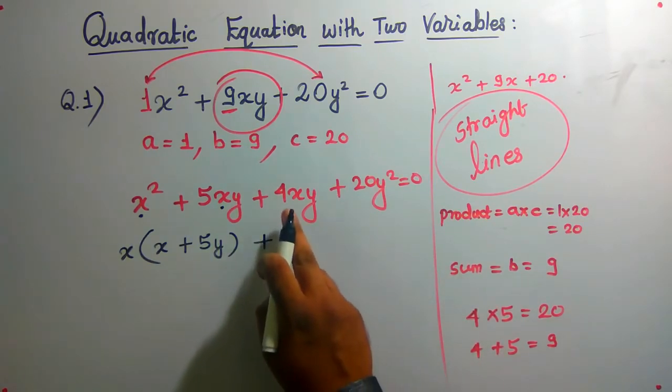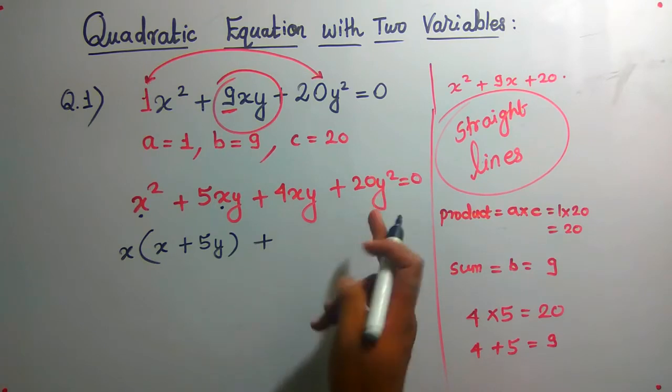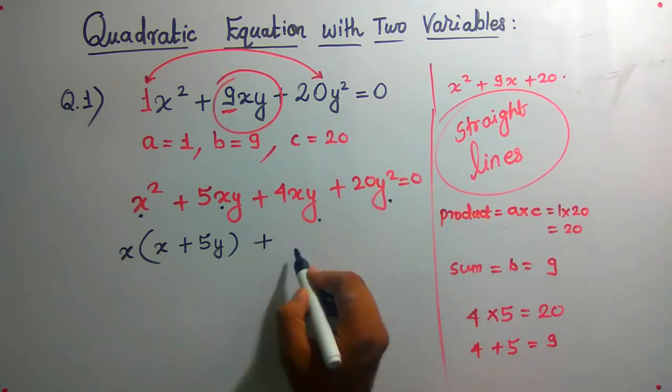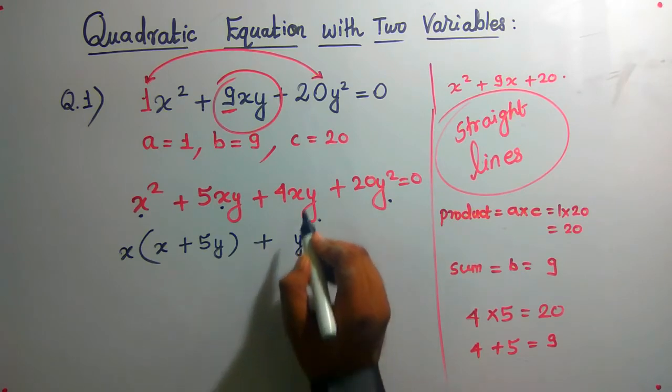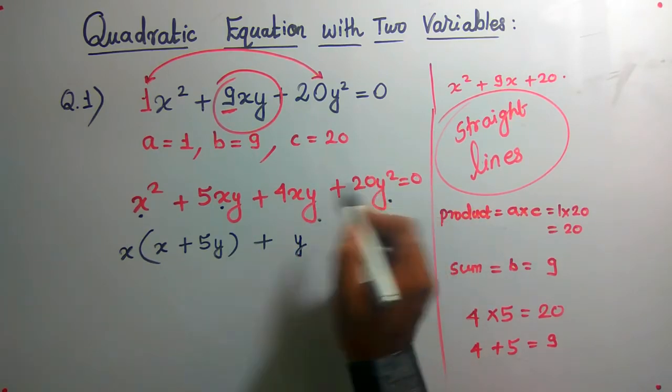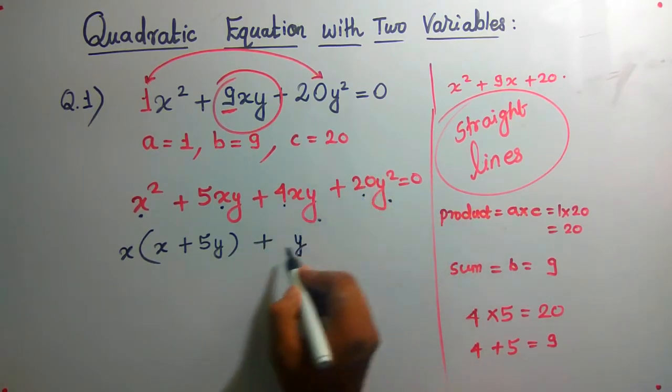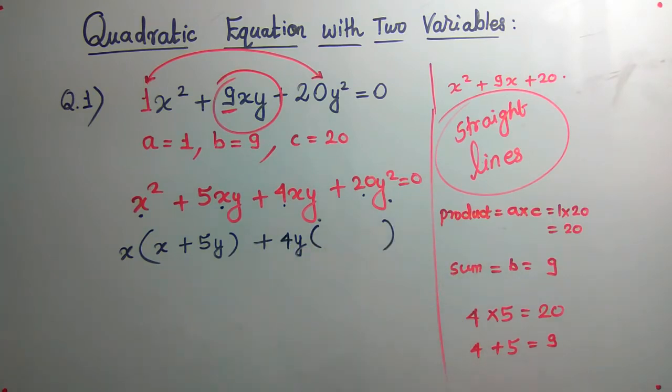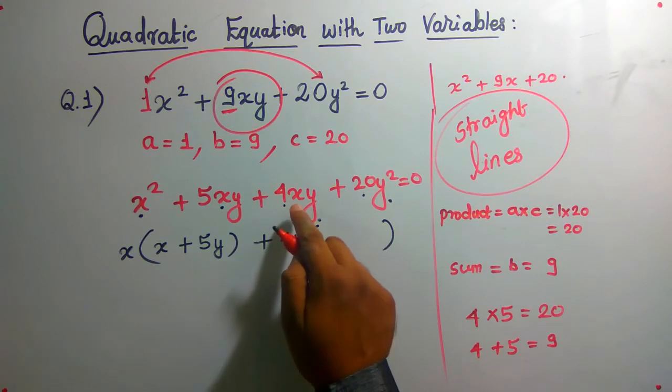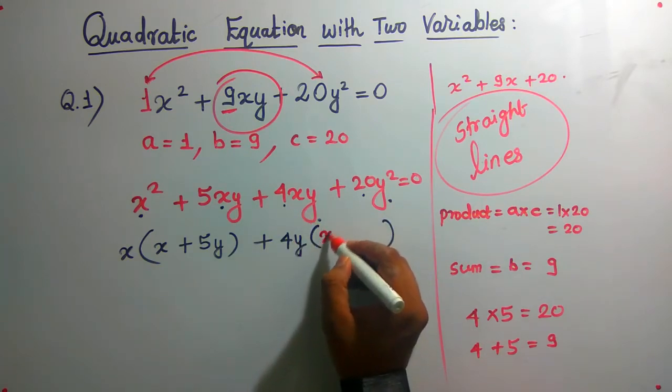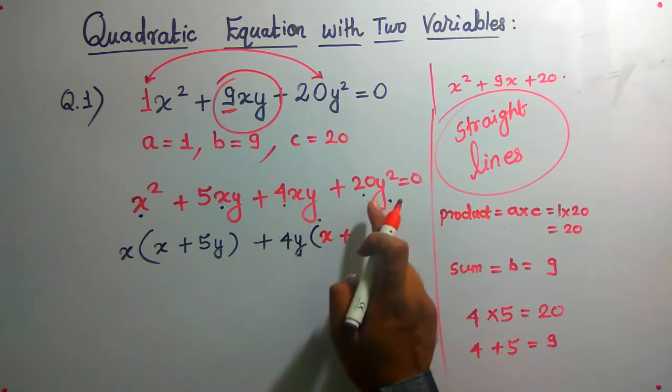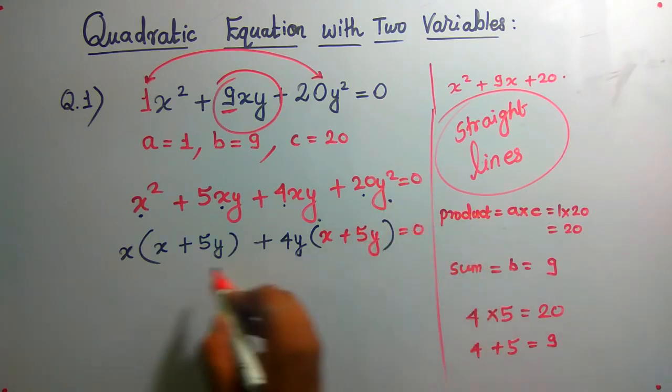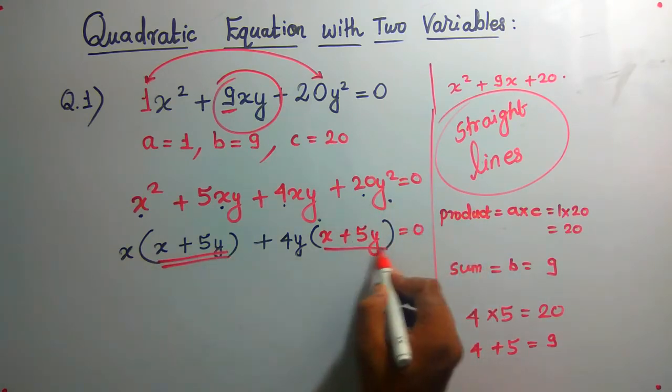Next, 4xy + 20y². In these two, what is common? I think y. Oh, 4 fives are 20, so 4 is also common.